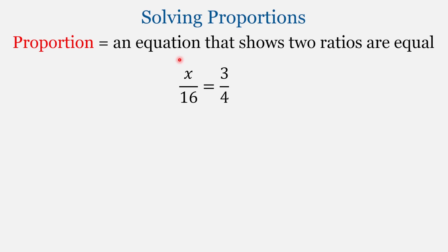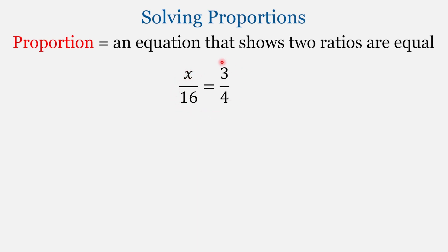A proportion is an equation that states that two ratios are equal to each other. So in the equation below, we have x over 16 is equal to 3 fourths. For example, if we had the ratio 3 out of 4 dentists prefer toothpaste A, and we have 16 total dentists, how many of them prefer that toothpaste? So that's the type of equation we are solving here.